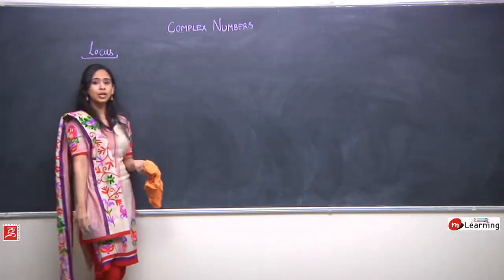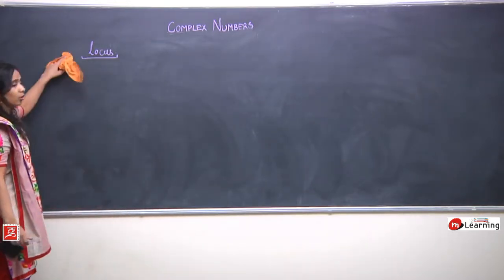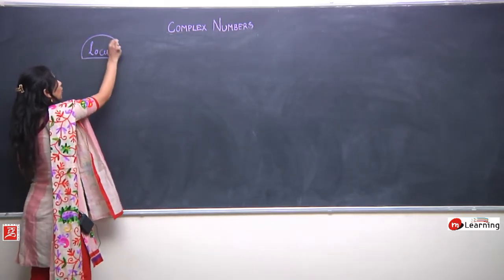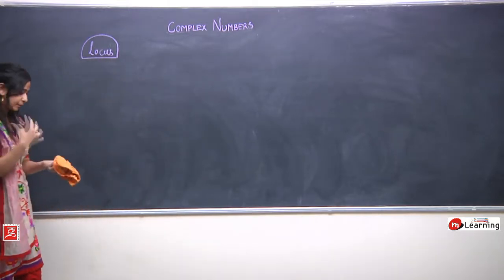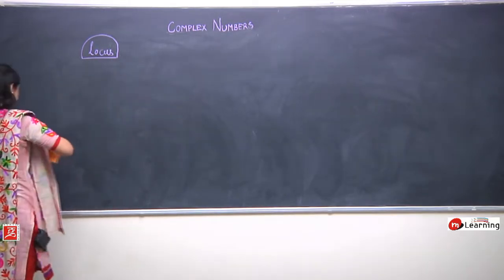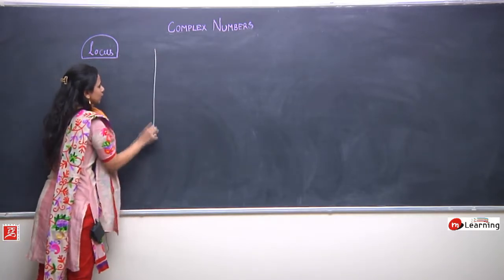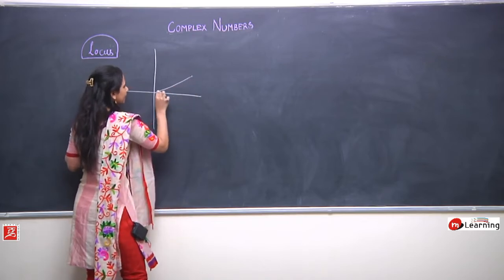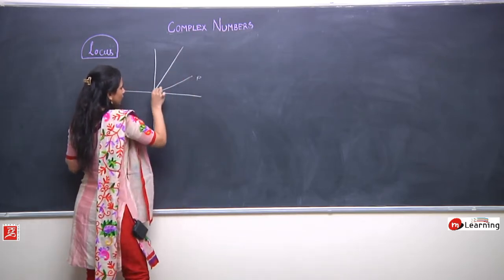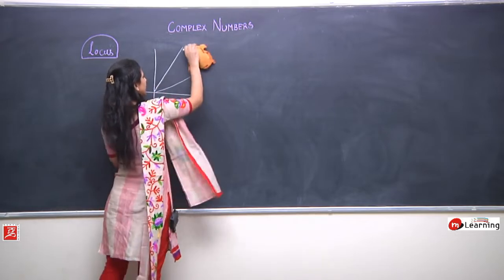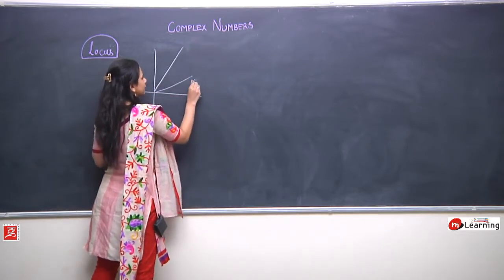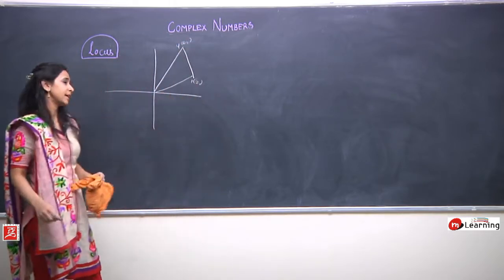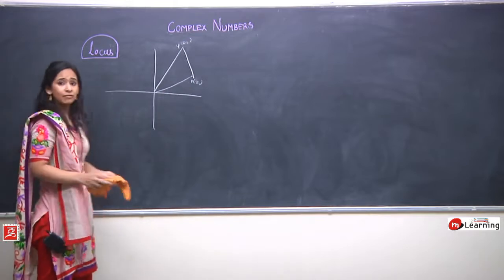We have studied a complete topic of coordinate geometry to find the locus of points for real numbers. Now, the next topic we are going to start is finding the locus of points for complex numbers. We have already seen that if we have points P and Q — P representing complex number Z1 and Q representing Z2 — then we can represent PQ by Z1 minus Z2. This we are all comfortable with.